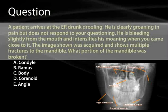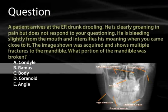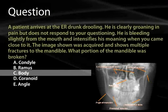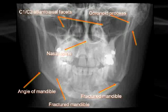Let's do another question. A patient arrives in the ER drunk and drooling, groaning in pain but not responding to questioning, bleeding slightly from the mouth, and intensifying his moaning when approached. The image shows multiple fractures to the mandible. What portion of the mandible was broken? The portion injured is the body — in fact, there may be two to three fractures along the body of the jaw. Just like the pelvis, the jaw often fractures in two places.